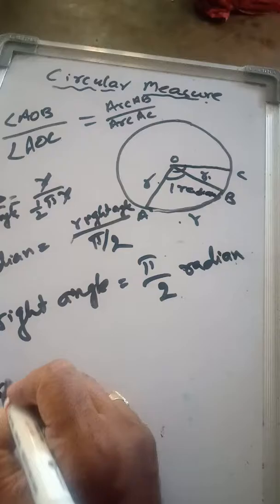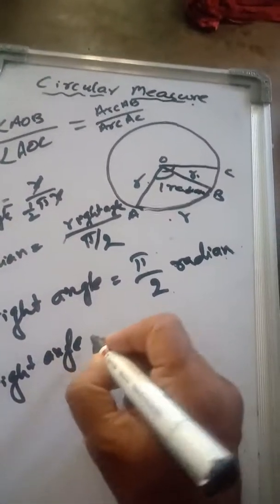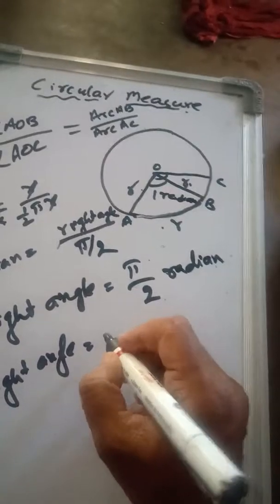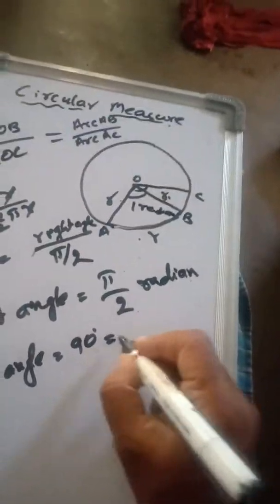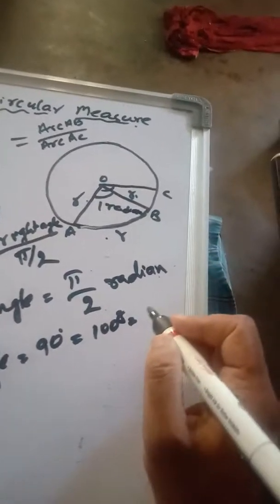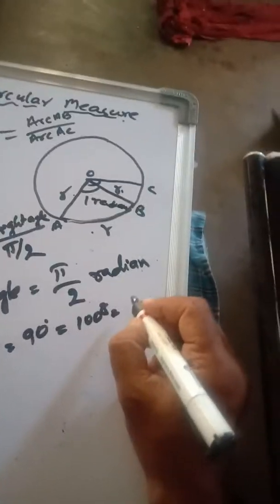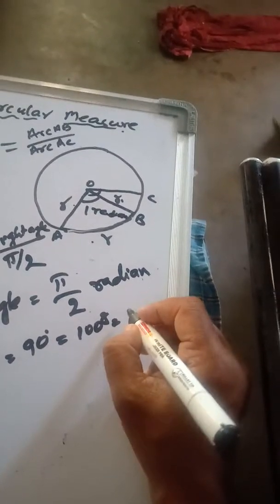Always, we write one right angle in all systems. In the sexagesimal system, it equals 90 degrees. In the centesimal system, it's 100 grades. And in radian or circular measure, it's π/2.